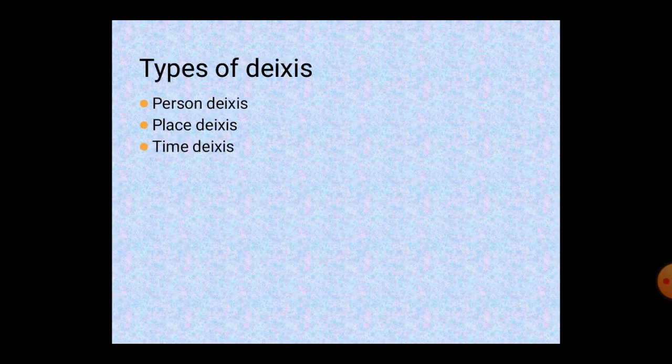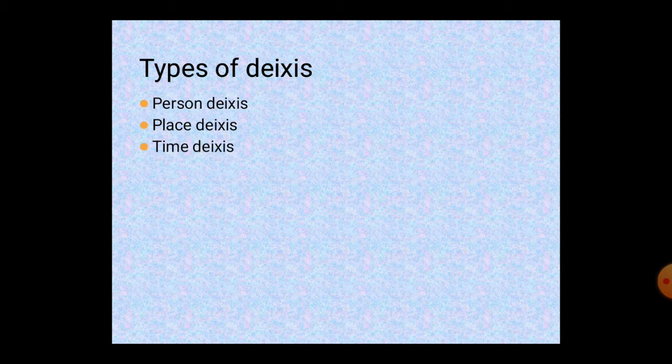Deixis has three types. The first is person deixis, next is place deixis, and the last is time deixis.